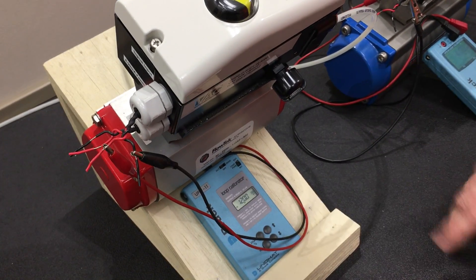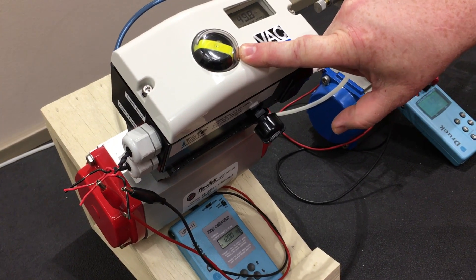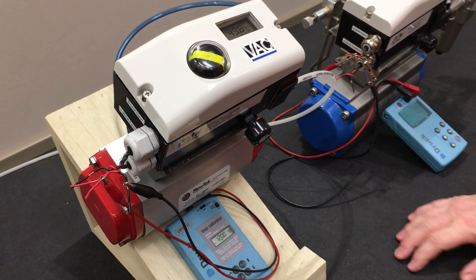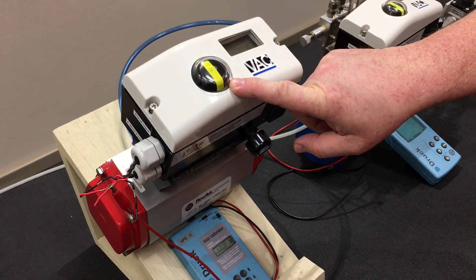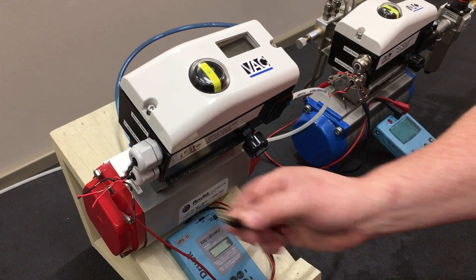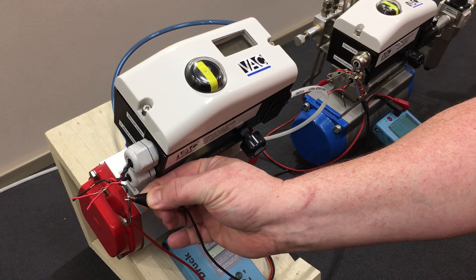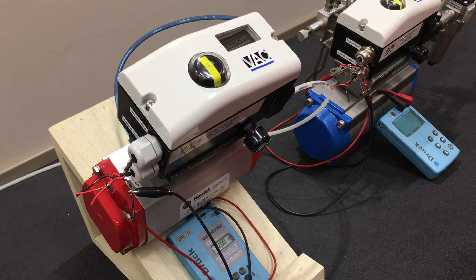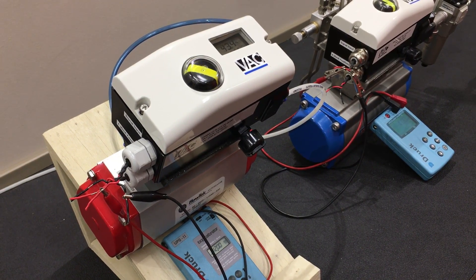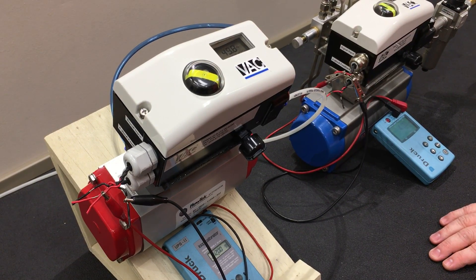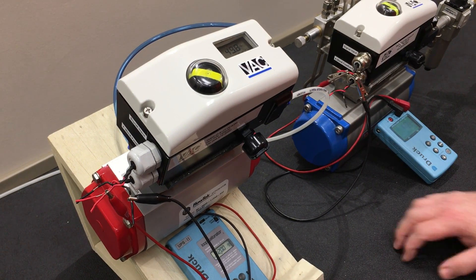We're going to take this unit and run it to 50%, and you'll see that it's now at 50%. We will remove the signal and the unit drives closed. When the signal is introduced back to the positioner, it will go to whatever signal it is given once it boots back up. Back to 50%. That is the function of a standard fail-safe positioner.